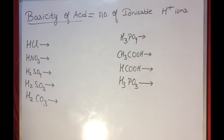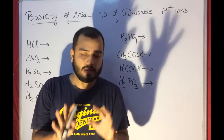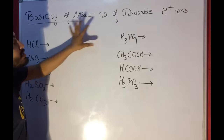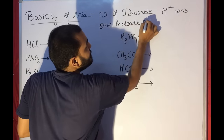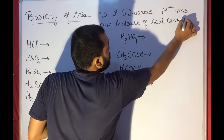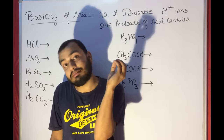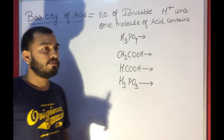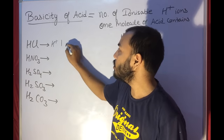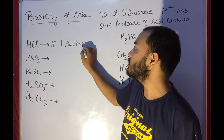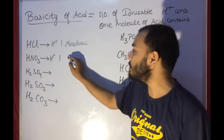Now let us discuss the basicity of an acid. Basicity of an acid is the number of ionizable H+ ions one molecule of acid contains. It is not the number of hydrogen atoms — the number of hydrogen atoms is different from the number of ionizable H+ ions. HCl gives only one H+, so basicity is one — also called monobasic. HNO3 also gives one H+, so basicity is one, monobasic.